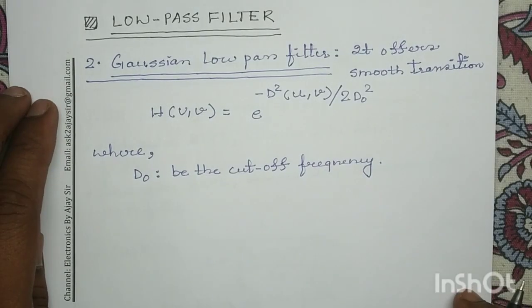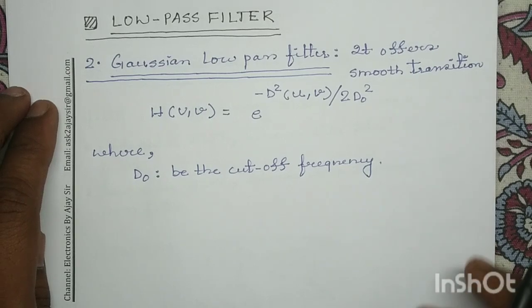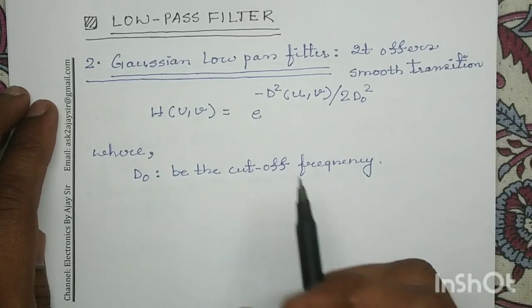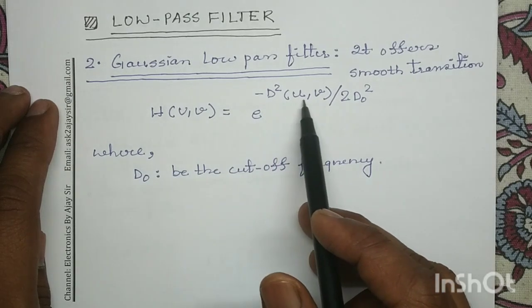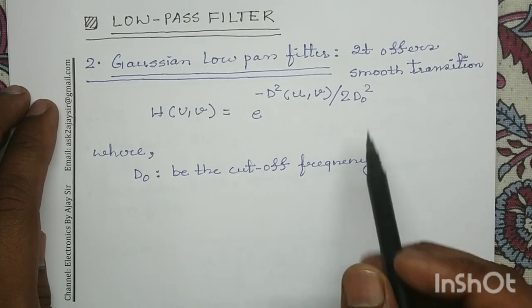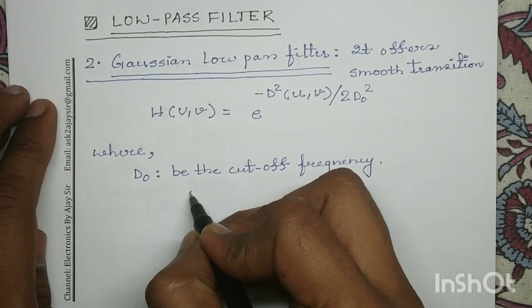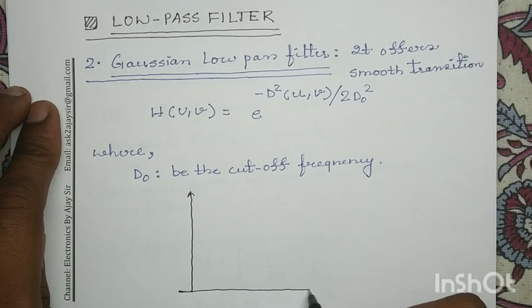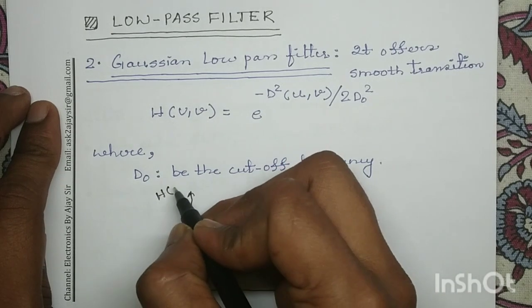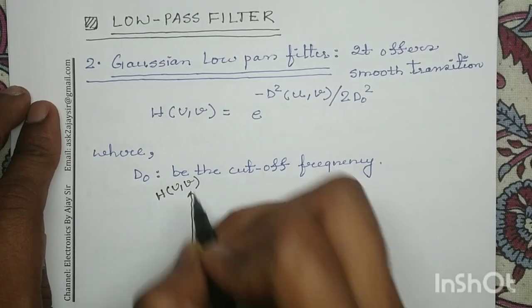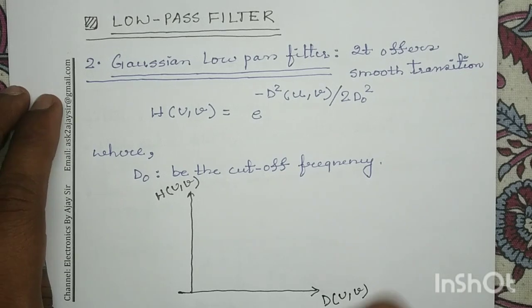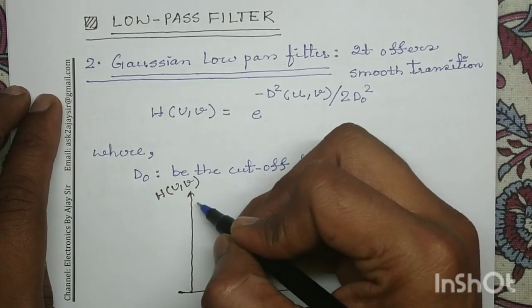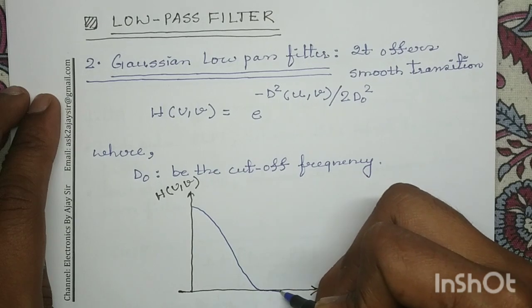The Gaussian low pass filter offers a very smooth transition. Its equation is H(u,v) = e^(−D²(u,v) / 2D₀²), where D₀ is the cutoff frequency. If we plot the transfer function with H(u,v) on the y-axis and D(u,v) on the x-axis, the Gaussian low pass filter produces a very smooth transition curve.